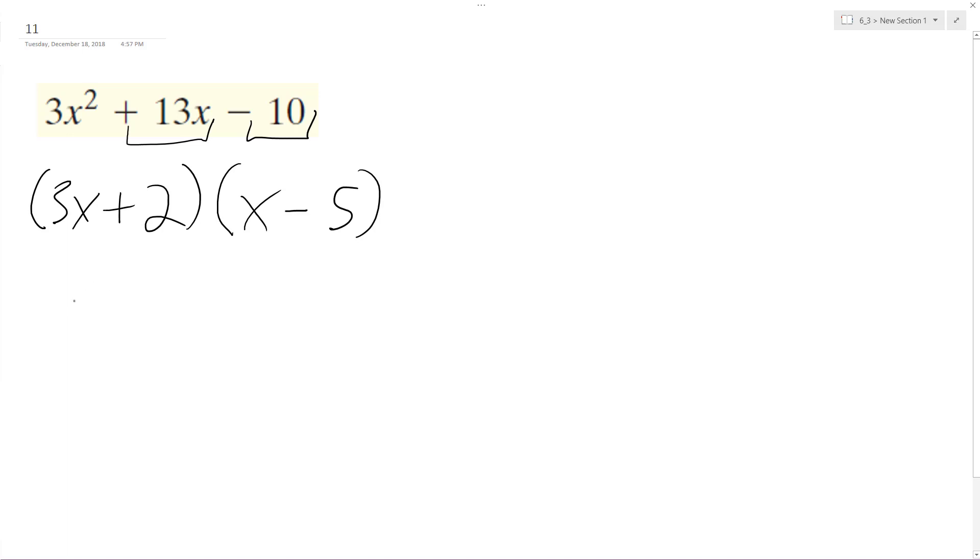So let's test that out. So 3x times x times negative 5 times 3x plus 2 times x and then 2 times negative 5. So we end up with 3x squared minus 15x plus 2x, which is plus, oh, you know what?